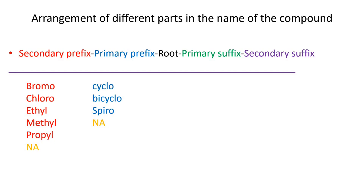Primary prefixes include cyclo, bicyclo, tricyclo, spiro, bispiro, etc. This part is also not necessary in an organic compound because there are many compounds that are not in ring form. The third and most important part is the root — the main compulsory part of the compound. This shows the number of carbon atoms. For example, meth represents one carbon, eth represents two carbons, and so on.